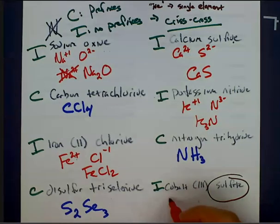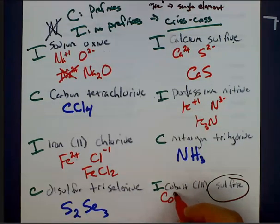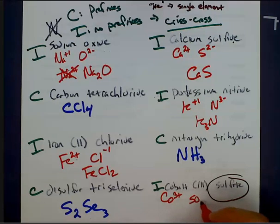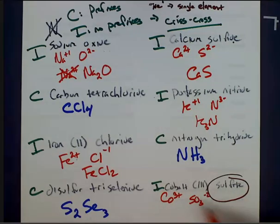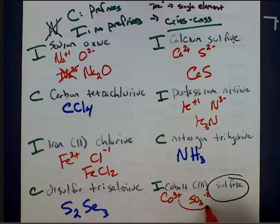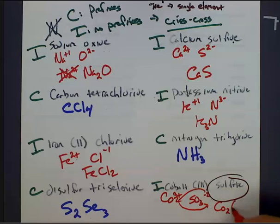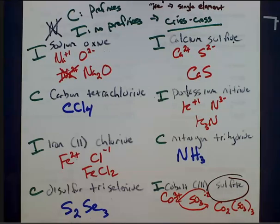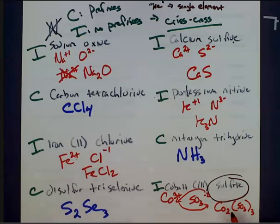Finally, this tricky one. Cobalt plus three. Sulfite. SO3 minus two. Crisscross that. Remember that you've got to bring this three to the outside of a set of parentheses. You end up with CO with a little two. SO3 inside parentheses with a three outside. Make sure also that this is big C, small O, and not big C, big O. Because that would just be carbon dioxide. And that would make no sense.